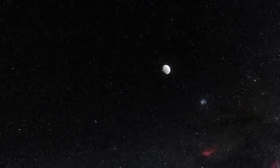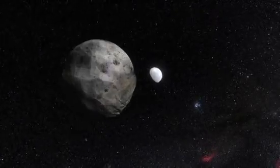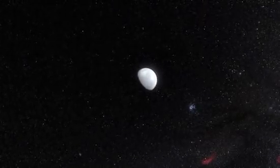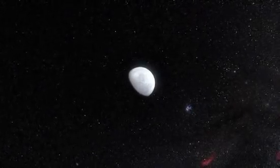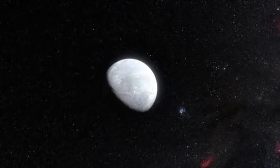Eris is three times farther from the Sun than Pluto at the moment and until now was believed to be about 25% bigger. But the new observations show that Eris is in fact almost exactly the same size as Pluto, with a diameter of around 2,330 kilometers.